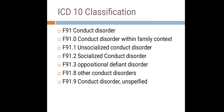Under ICD-10, conduct disorder is coded as F91. It is characterized by repetitive and persistent dissocial, aggressive, and defiant conduct. Examples include frequent lying, physical violence, stealing, robbery, and cruelty towards animals — all falling under the F91 category.